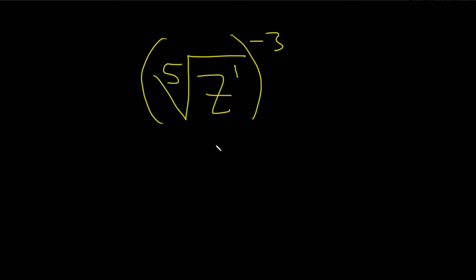There is really a 1 here, and so whenever you have something like this, it'll just be z, and it's always this number divided by this number. It's always this one over this one. In this case, it's 1 over 5.